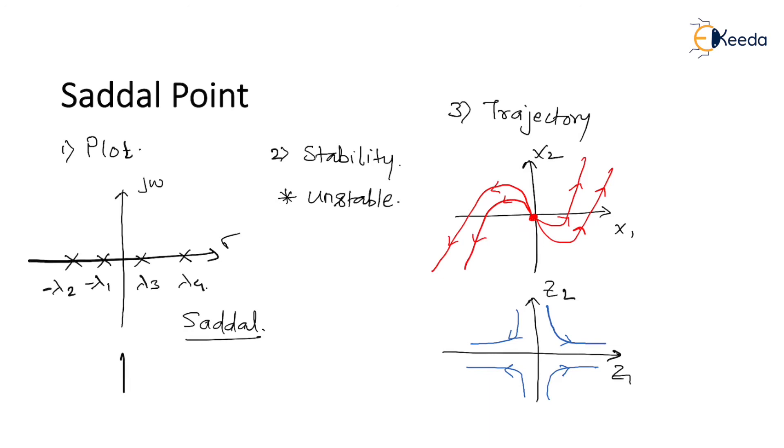Now suppose if I want to draw the pole location of an unstable node, all the pole locations would have been on the RHS of the S plane - unstable node.